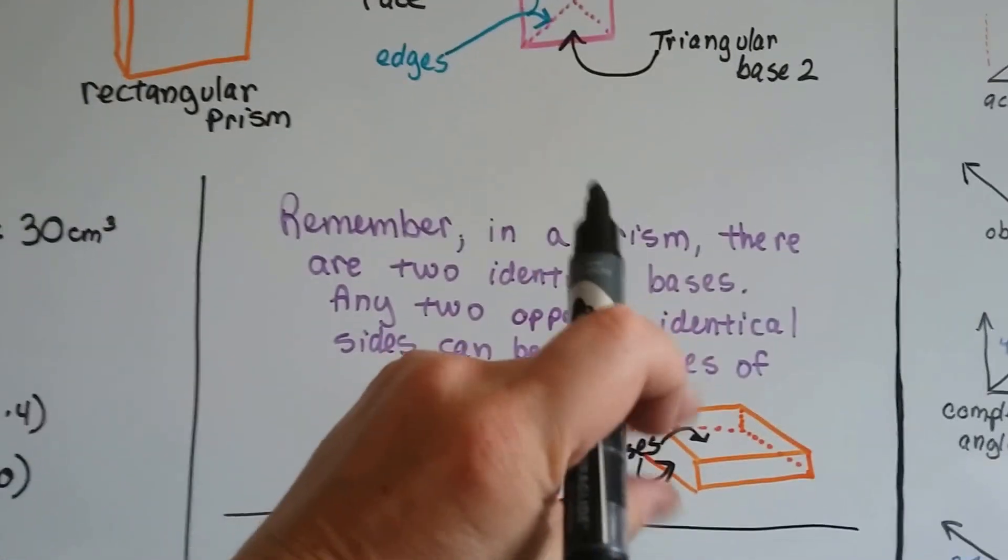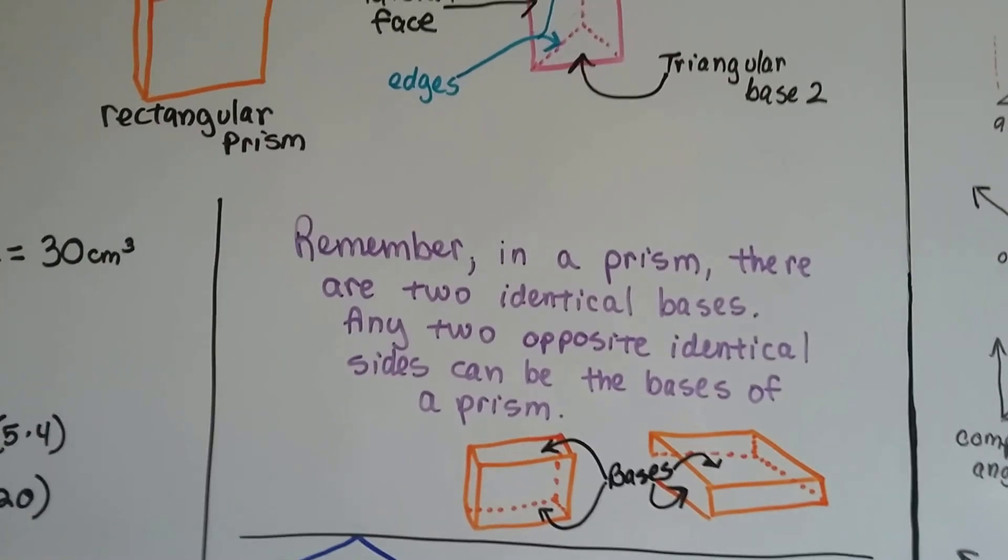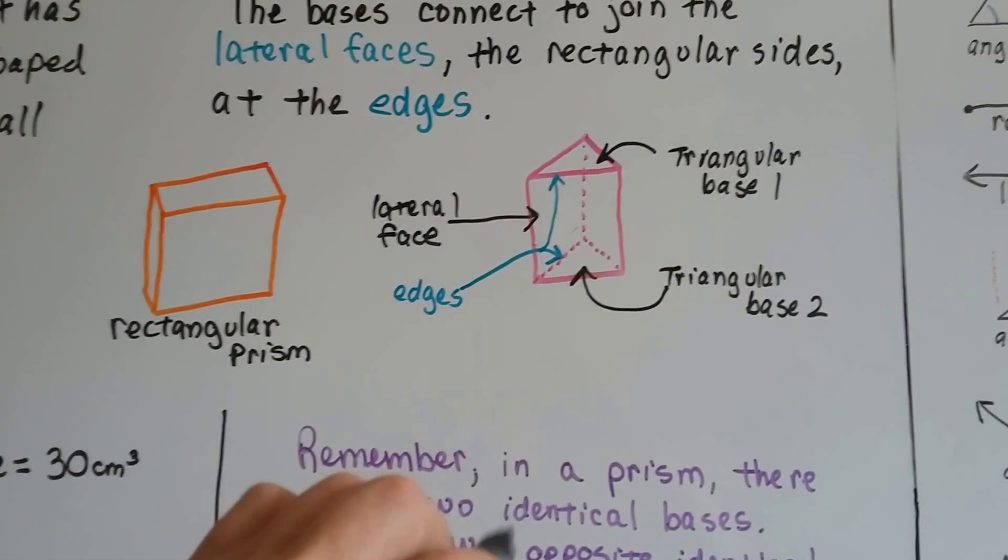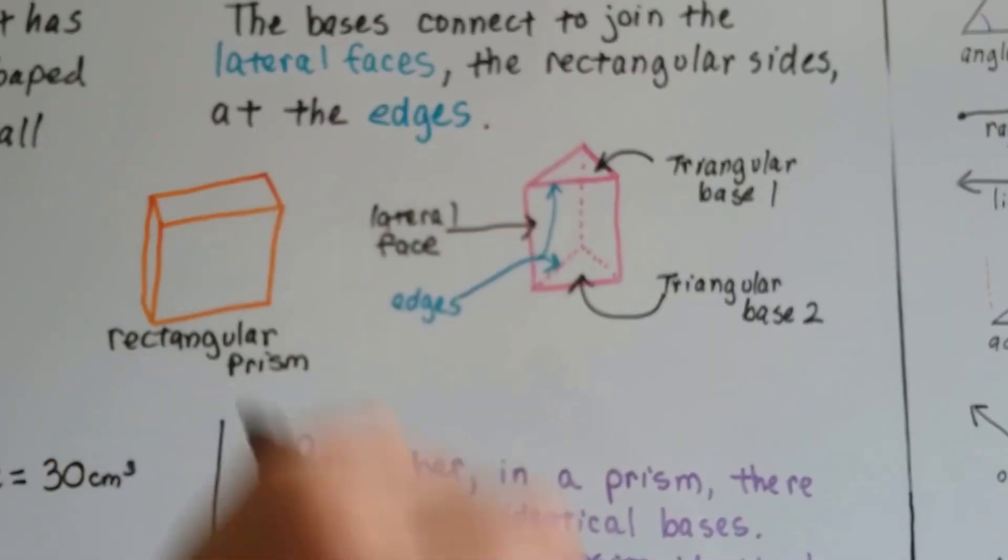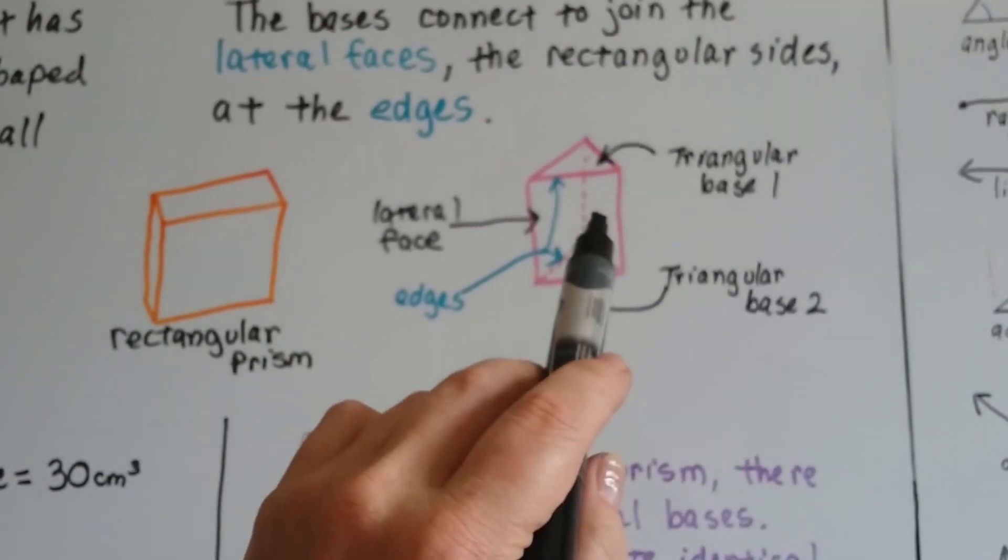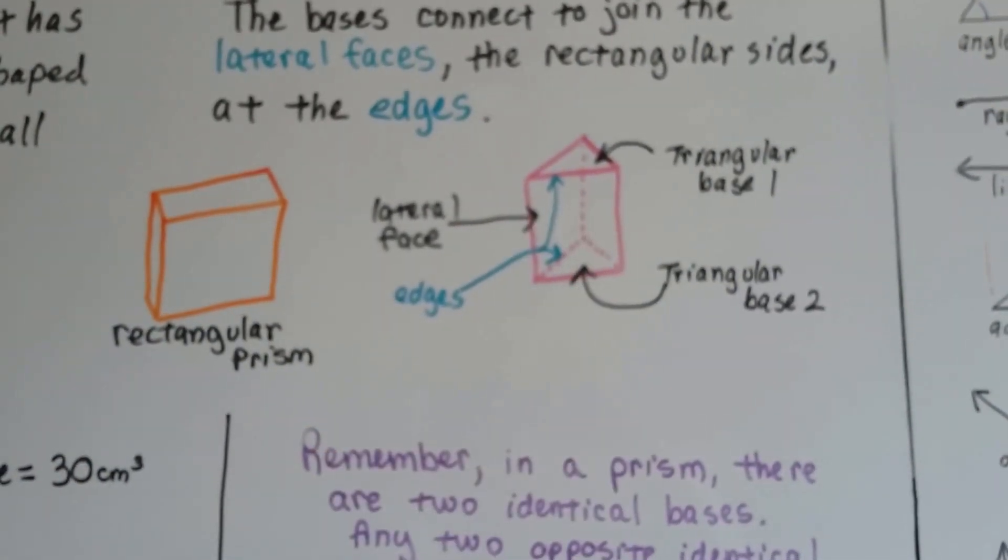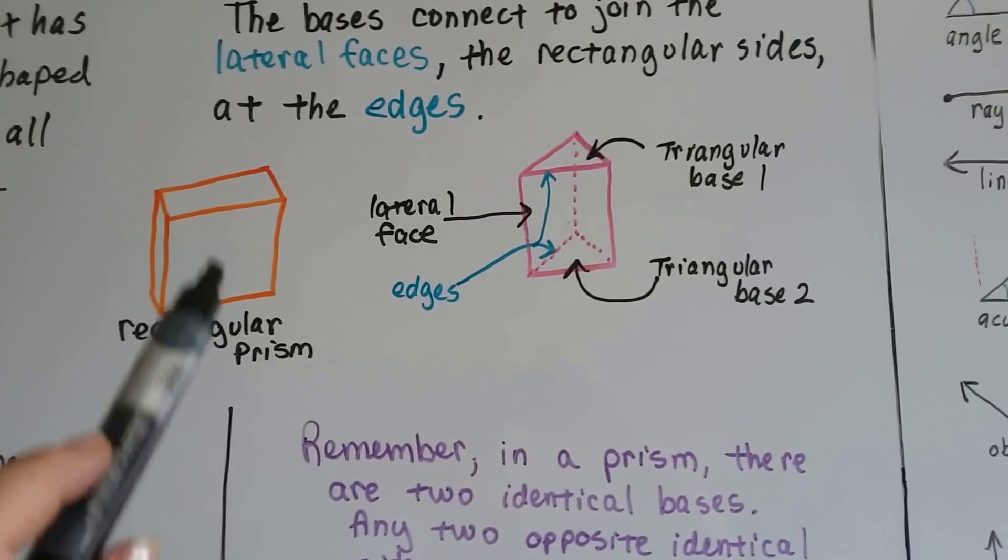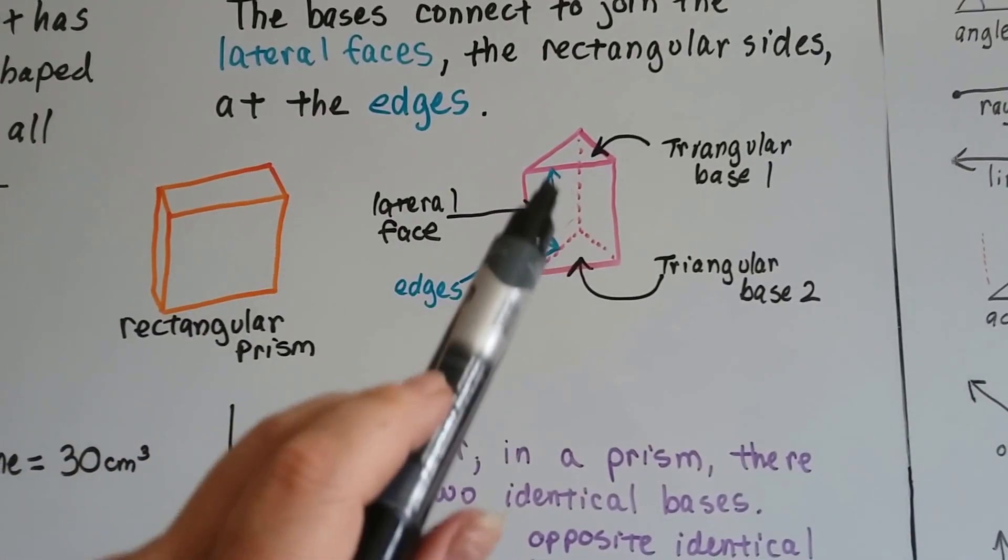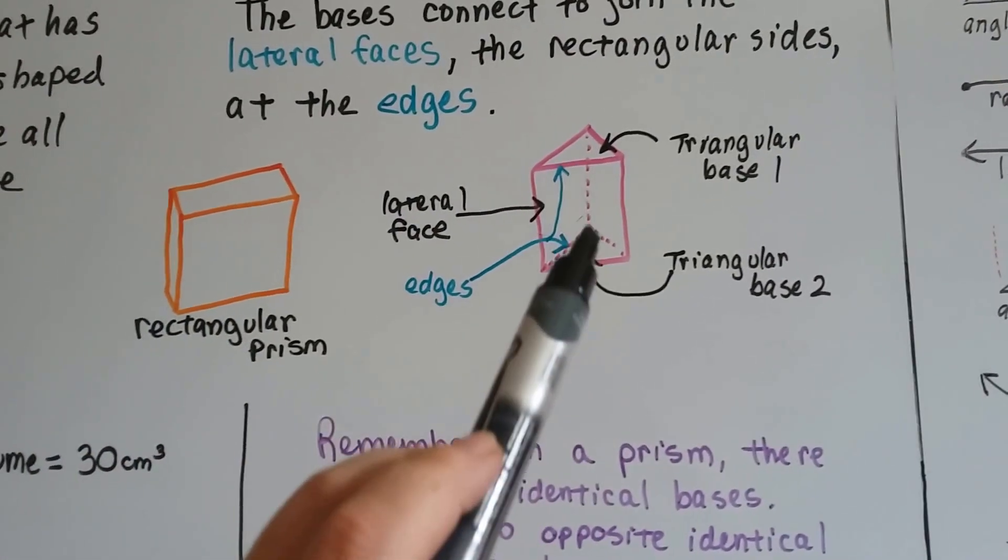For a triangular prism we use the two triangles as base 1 and base 2, and each one of these rectangles is a lateral face. Wherever they meet is an edge - wherever a base meets a lateral face it's called an edge.